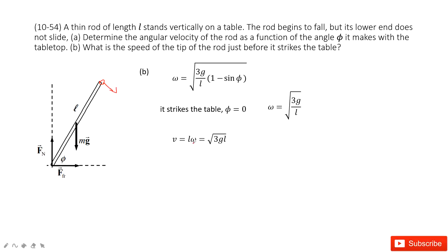We need to find angular velocity just before this rod hits the table. It looks like when it hits the table, phi equals 0. Do you agree?